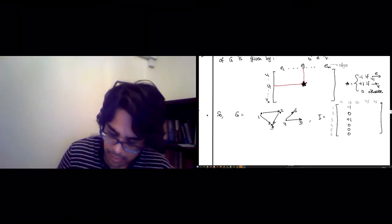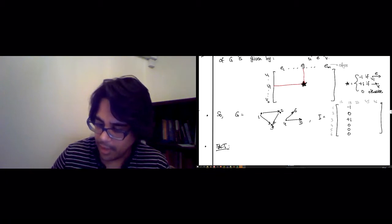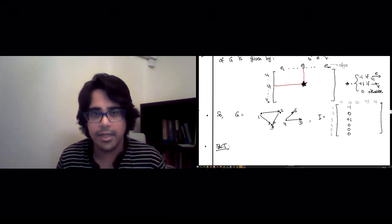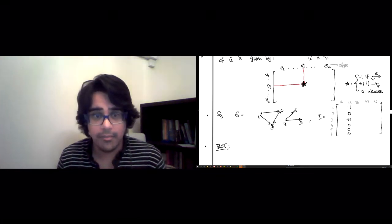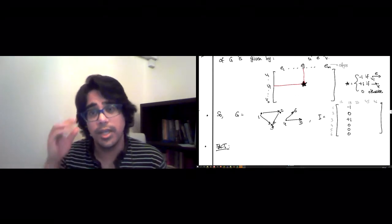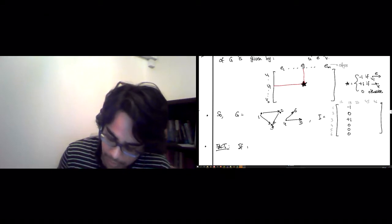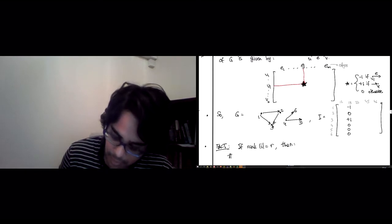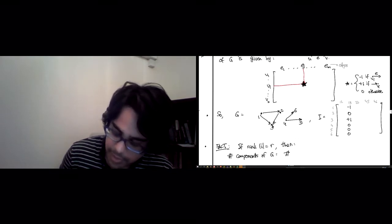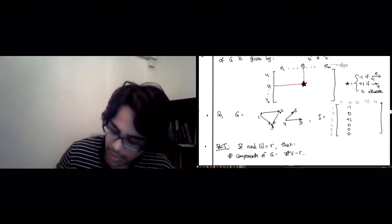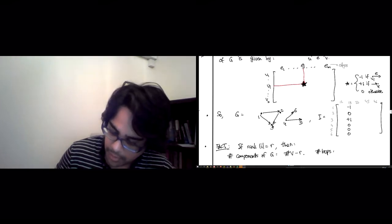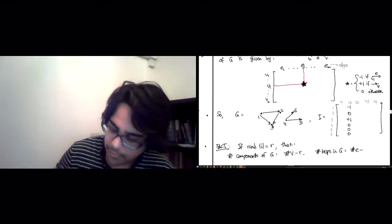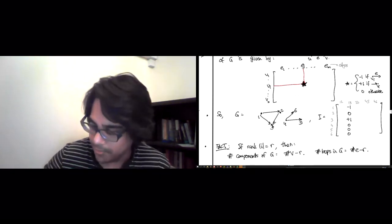And here's the fact that's sort of interesting, is that the rank of this incidence matrix I is telling us interesting geometric properties of G. If rank of I equals R, then number of components of G is the number of vertices minus R. And the number of loops in G is the number of edges minus R.